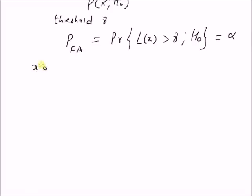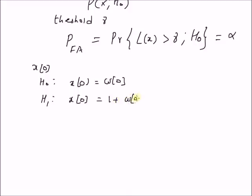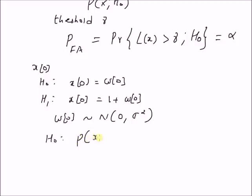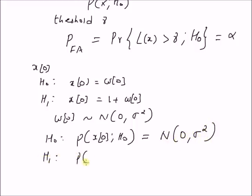Consider an observation x₀ that has two models under two hypotheses. Under H₀, x₀ equals the noise component w(0). Under the alternate hypothesis H₁, x₀ equals 1 plus w(0). The noise component w(0) follows a normal distribution with mean 0 and variance sigma squared. So the distribution of x₀ under H₀ is N(0, σ²), and under H₁ it is N(1, σ²).